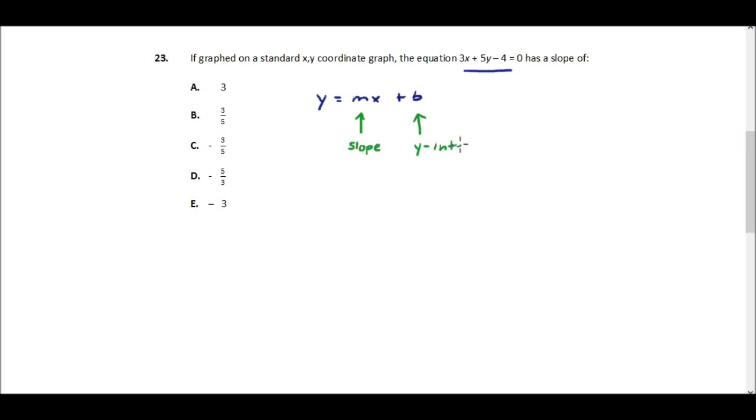And that just means where the line actually intercepts the y-coordinate of the graph. So if we have our x-y coordinate graph, here's the y, here's the x, and we have this line, and somewhere it's going to intercept, either here or it's going to go here or wherever.